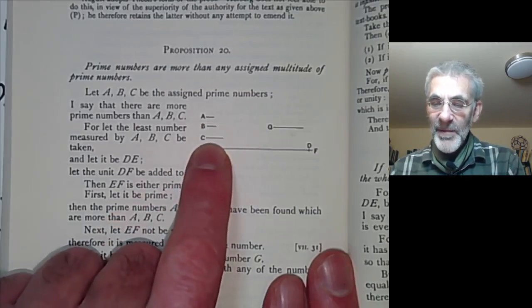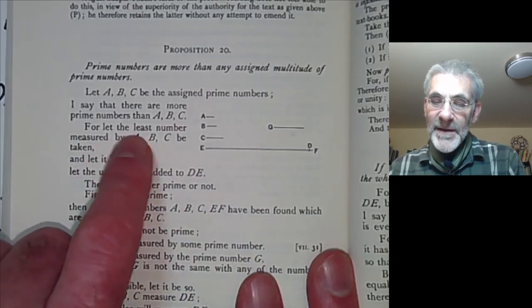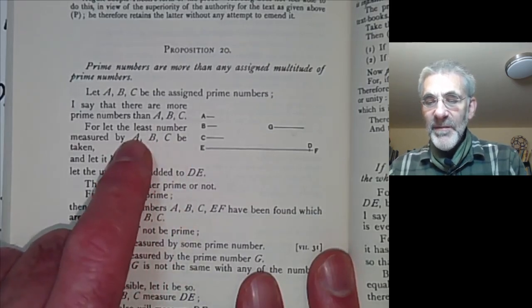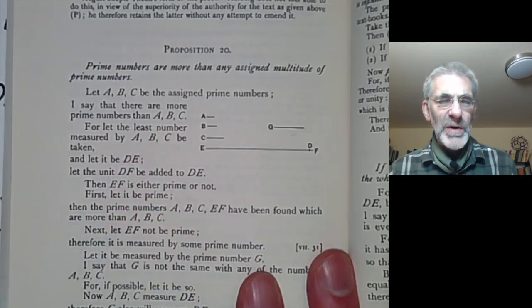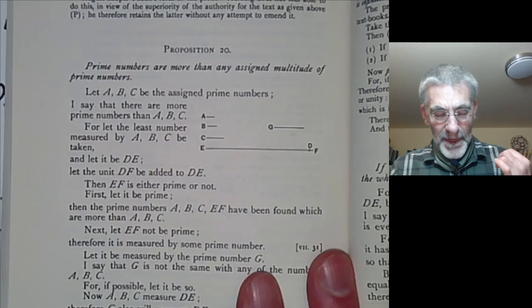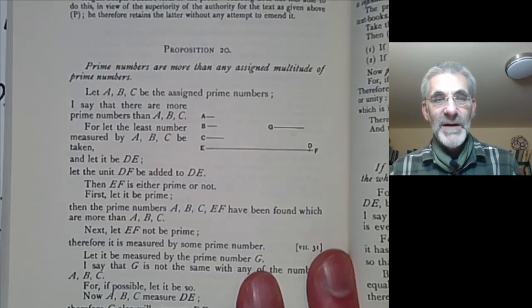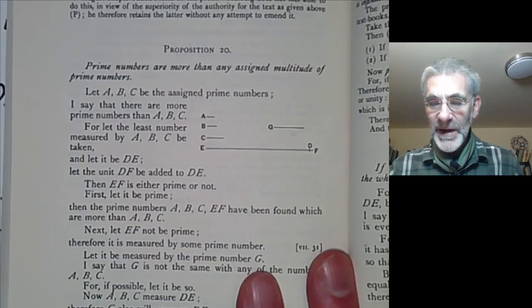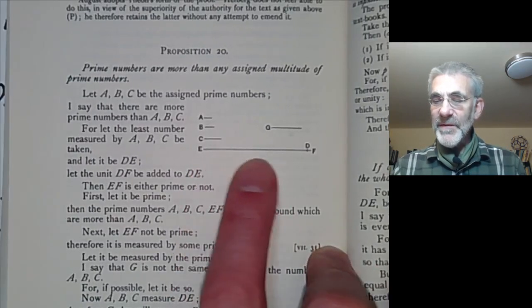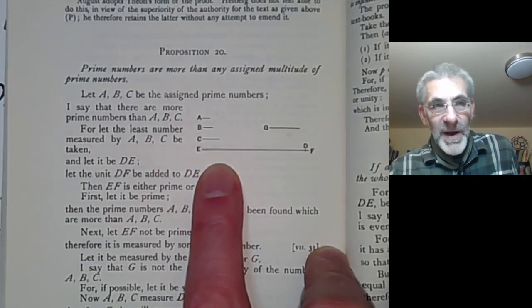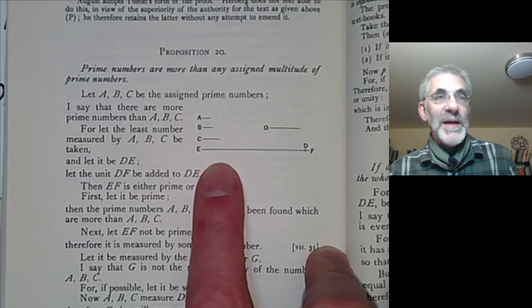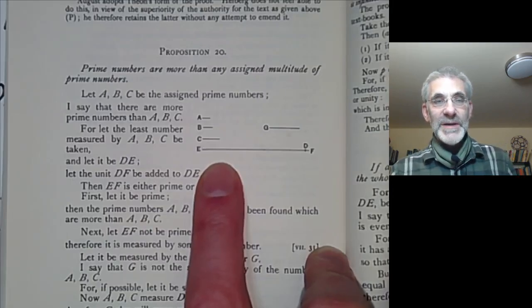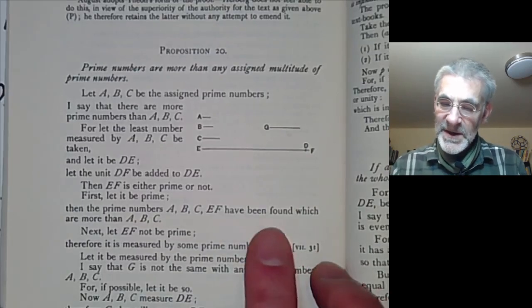Also he doesn't actually quite multiply them. He just says let the least number measured by A, B, and C be DE. Well measured by means divisible by. So instead of multiplying them he's taking the least number that they all divide and that's because Euclid didn't really have a really good concept of multiplying several numbers together. I think that's partly because he thought of numbers as being line segments and you can multiply two line segments together that gives you a rectangle, and you can multiply three together and get some sort of solid object which has a volume, but multiplying four or more together is getting a bit doubtful on geometric grounds if you think space is three-dimensional.